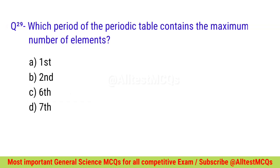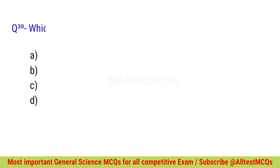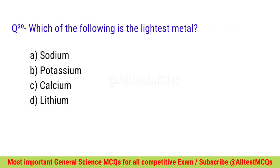Question number twenty-nine: Which period of the periodic table contains the maximum number of elements? Correct option is C — Sixth. Question number thirty: Which of the following is the lightest metal? Correct option is D — Lithium.